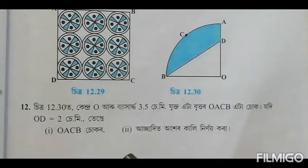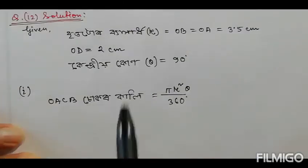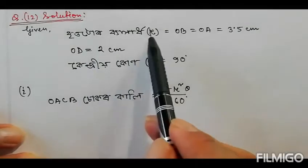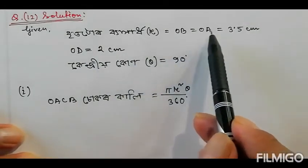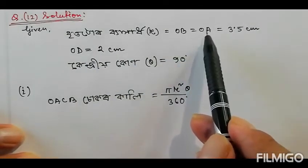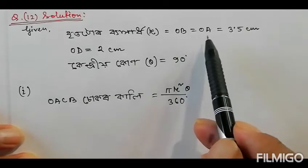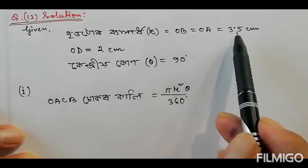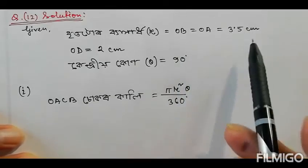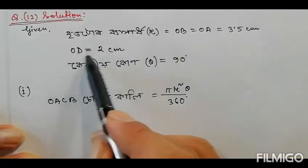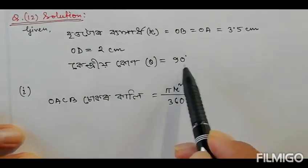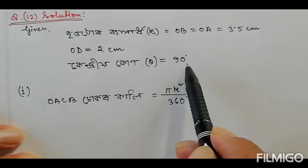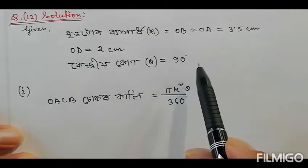This is the problem setup. R is equal to OA, OB, and OA — it is equal to 3.5 cm. OD is 2 cm. The angle we have is 90 degrees.